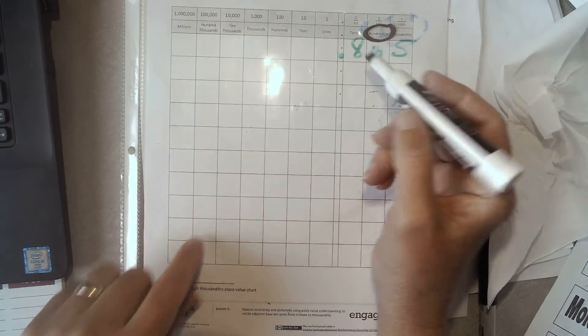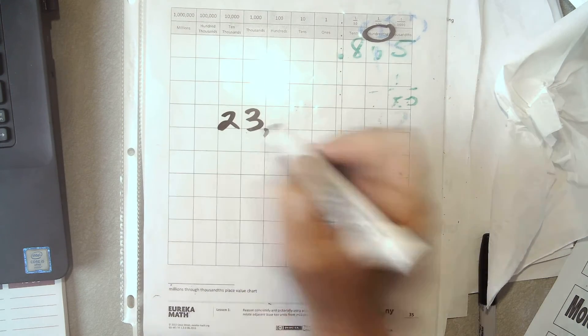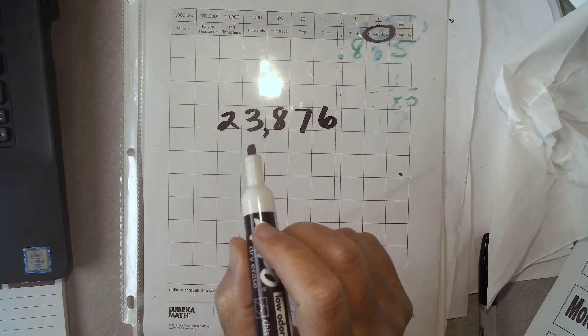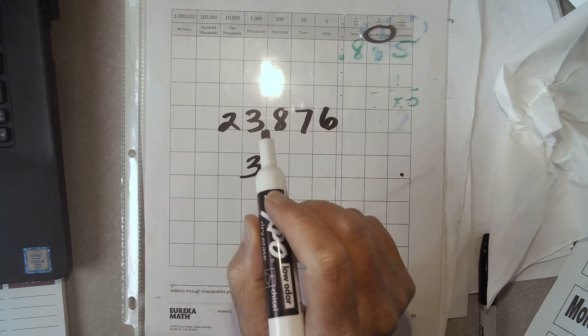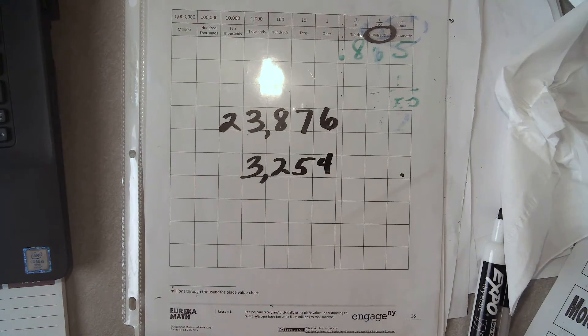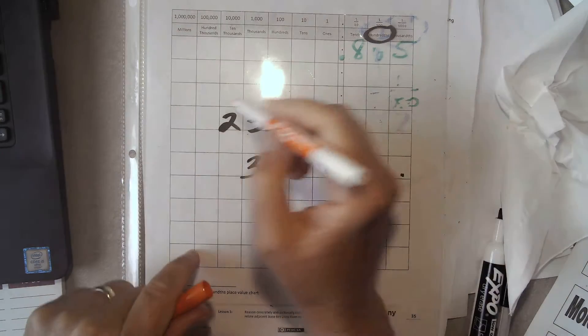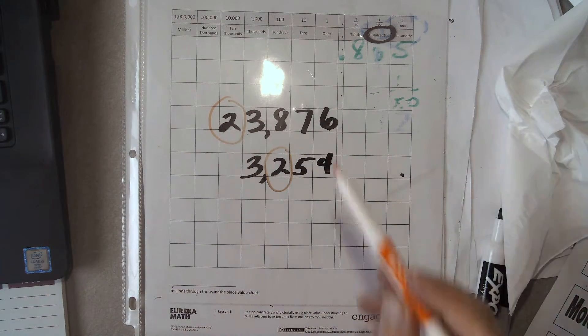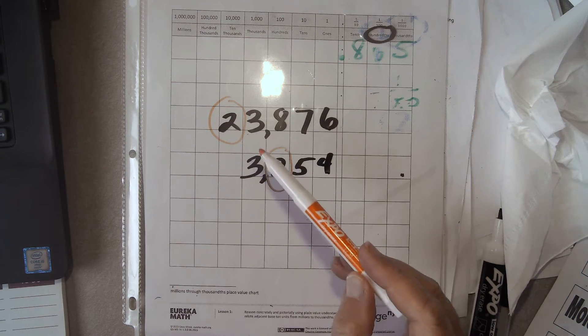So 23,876 compared to 3,254. We're looking at the 2. We're looking at this 2 compared to this 2. How many steps would I be going between these? 2.